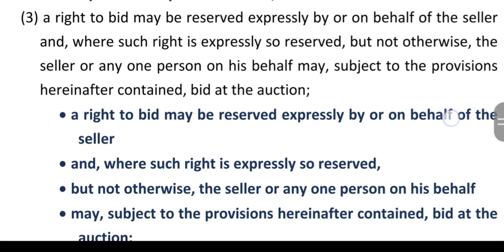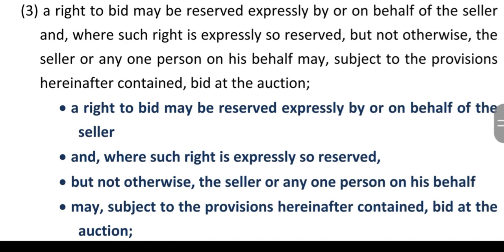Subsection 3: A right to bid may be reserved expressly by or on behalf of the seller. Where such right is expressly reserved, but not otherwise, the seller or any person on his behalf may, subject to the provisions hereafter contained, bid at the auction sale. Right to bid यानि बोली लगाने का अधिकार seller को या उसके behalf में किसी भी person को दिया जा सकता है — लेकिन वो right expressly reserved होना ज़रूरी है।